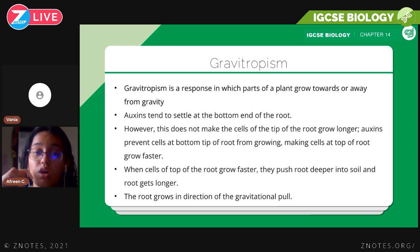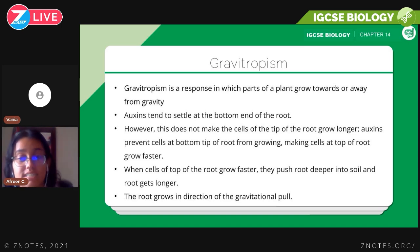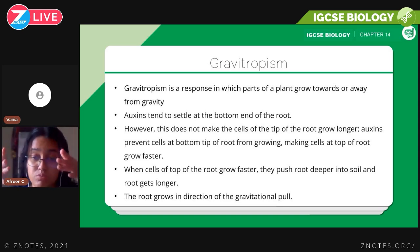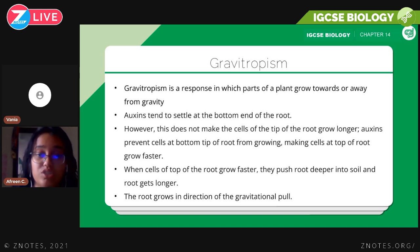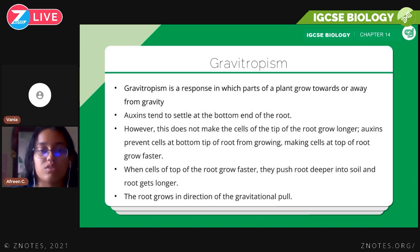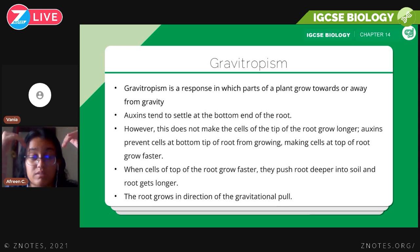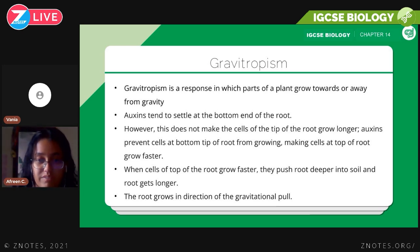Auxins are plant hormones that tend to settle at the bottom end of the root. However, this does not make the root tip grow longer — auxins prevent cells at the bottom tip of the root from growing, making cells at the top of the root grow faster. When cells at the top grow faster, they push the root deeper into the soil so it reaches water and nutritional areas. So plant roots show positive gravitropism because they grow in the direction of the gravitational pull.